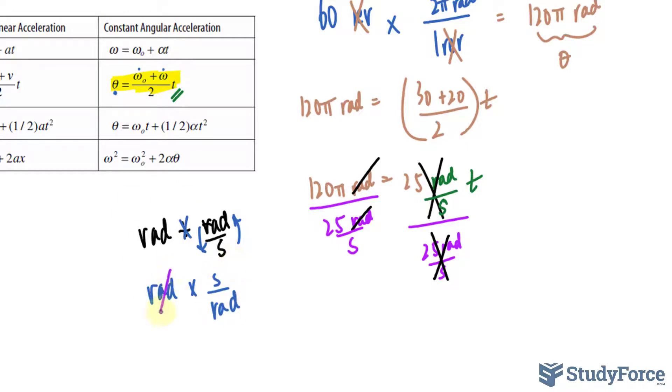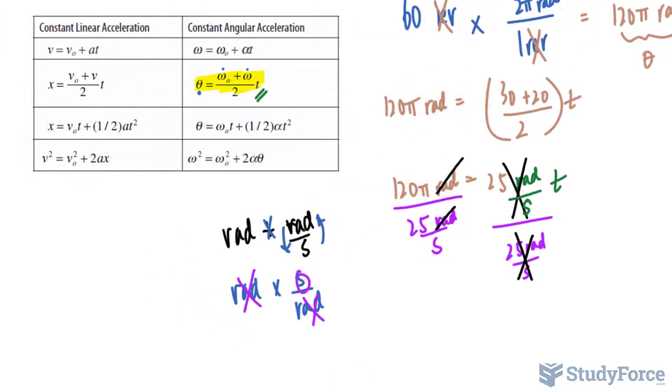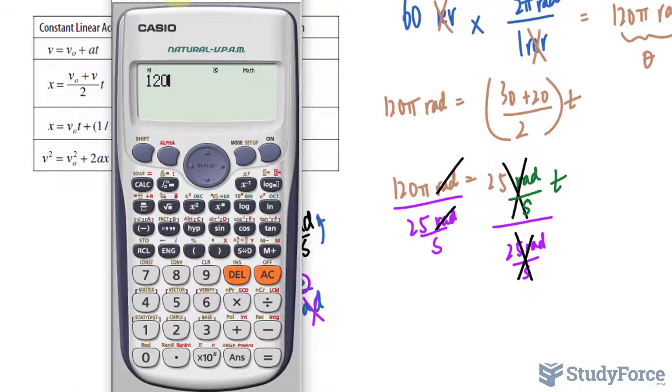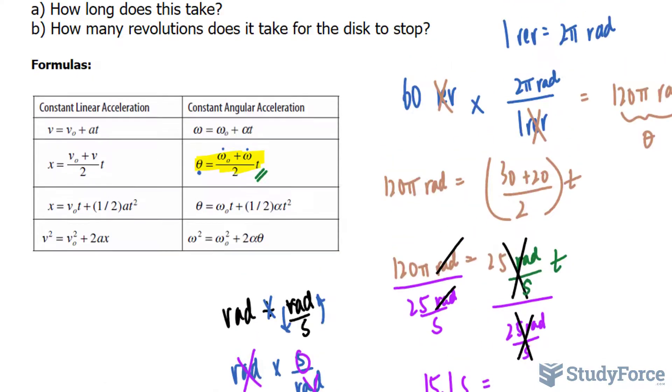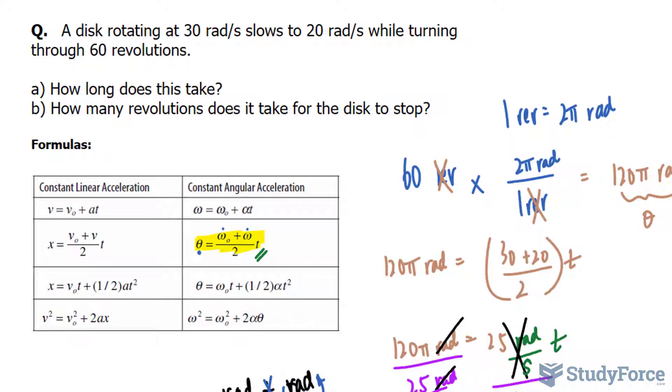And this is the exact reason why radians cancels and you end up with seconds. So now using our calculator to take care of the numbers, 120 times pi divided by 25 makes roughly 15.1, 15.1 seconds it takes for it to slow down from 30 radians per second to 20 radians per second in that 60 revolutions.